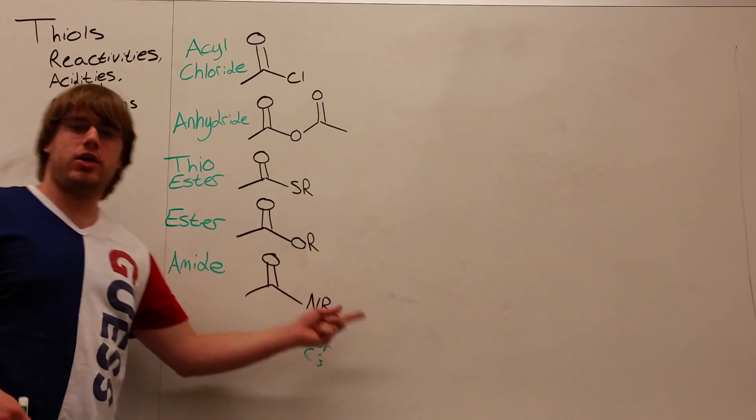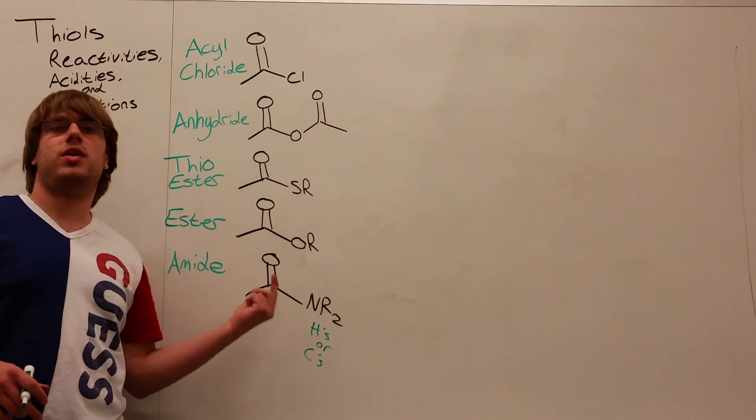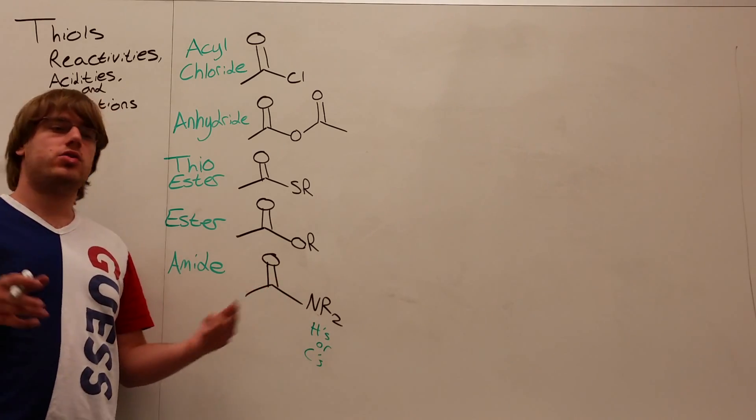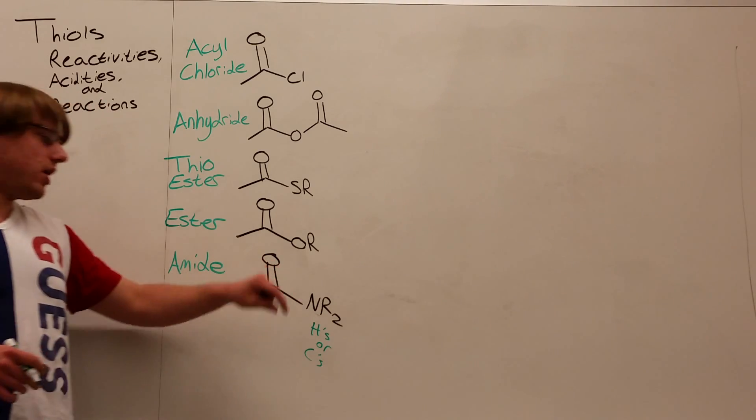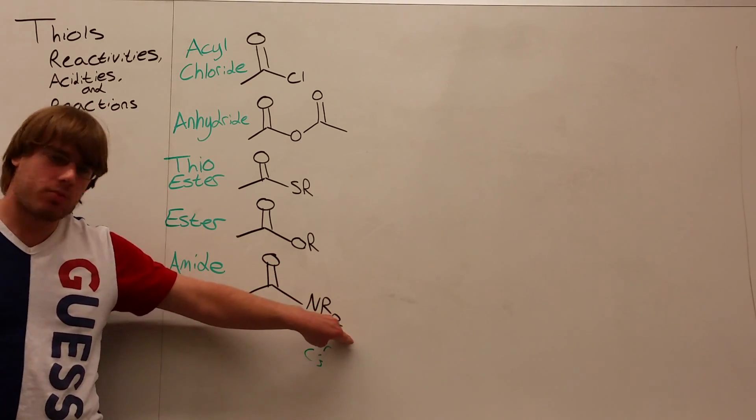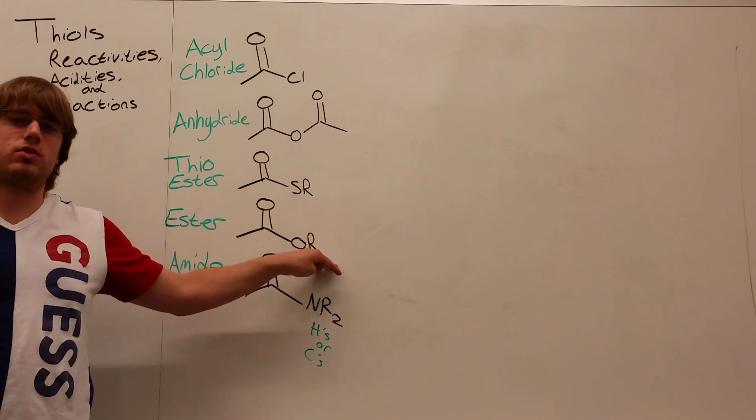So it could be NH2, it could be NHCH3, it could be NCH3CH3. So there are a bunch of different amides you could have, but in general, for amides, it's any number of hydrogens or carbons. And for the esters, it's only carbons, not hydrogens.